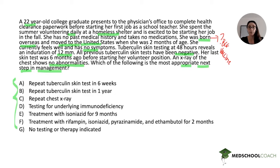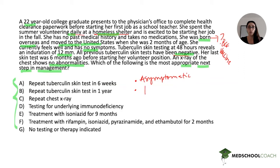Another risk factor is that she has been volunteering daily at a homeless shelter, which increases her risk of contracting TB. Her previous skin tests have all been negative, with her last one six months ago. Currently, she is asymptomatic, has a new tuberculin skin test with an induration of 12 millimeters — new because all previous ones were negative — and has a negative chest X-ray.